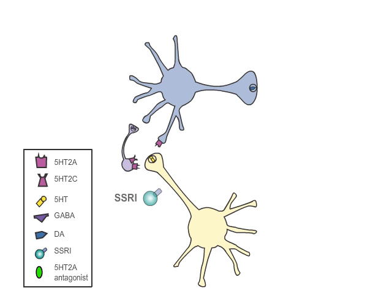Thus, when a serotonin reuptake inhibitor increases synaptic serotonin, the serotonin can bind to 5-HT2A and 5-HT2C receptors on GABA interneurons. This stimulates GABA release,